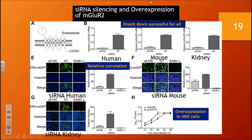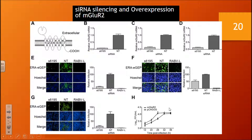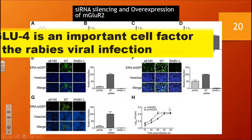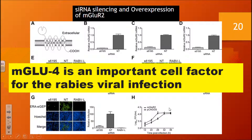They also wanted to see the relative viral titer when there is mGluR2 overexpression in HEK cells. Compared to the control, overexpression of mGluR2 resulted in a significantly higher viral titer of the rabies virus. Overall, this means mGluR2 is an important host cell factor for rabies viral infection.